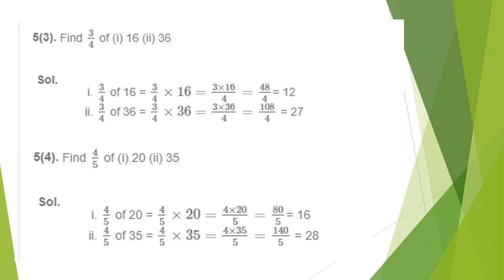Next: 3/4 of 36. That is 3/4 × 36 = 3 × 36 ÷ 4. Since 4 is common in 36 and 4, cancelling gives 3 × 9 = 27.